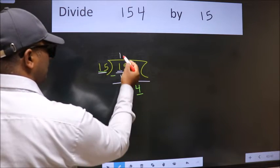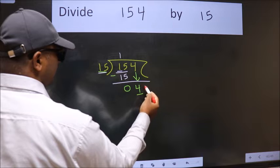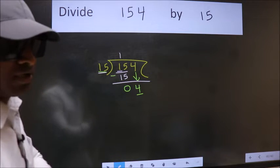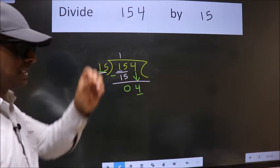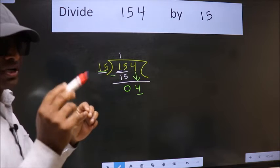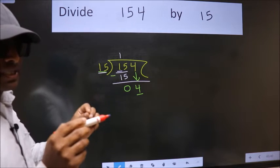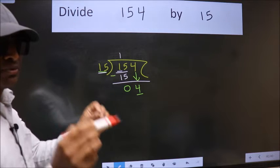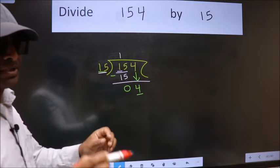In the same step you want to put dot, take 0, which is wrong. I repeat: bring down the number and also put dot, take 0. Bring down the number and put dot, take 0 both at the same step, you should not do.